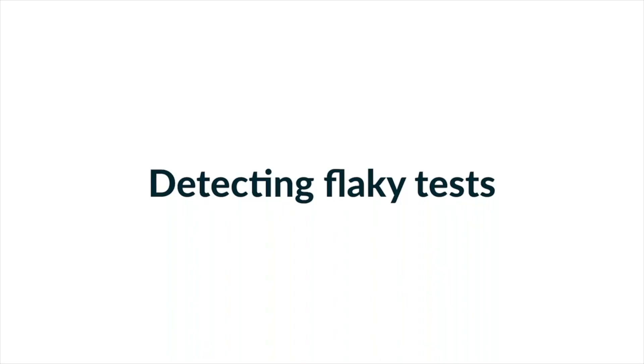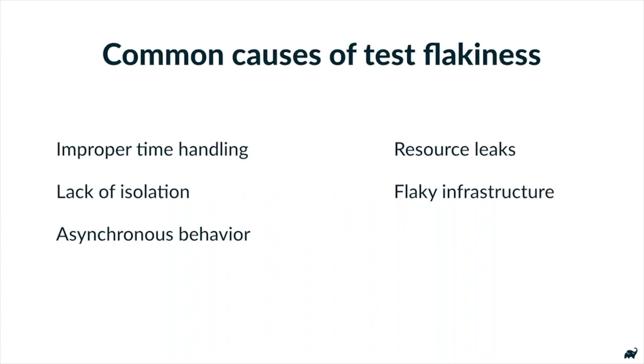We'll start by studying what makes tests themselves non-deterministic. One common cause of test flakiness is improper time handling. Did you know that Java's system clock is non-monotonic? That means if you call System.currentTimeMillis it can go backwards, and then you're getting negative numbers for durations you didn't expect — and you get flaky tests.